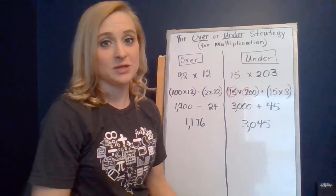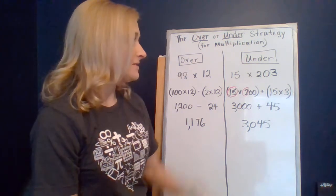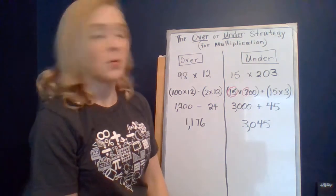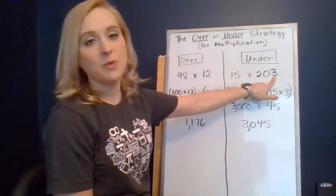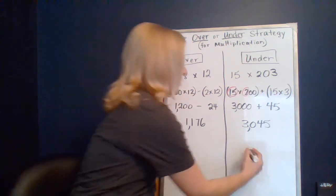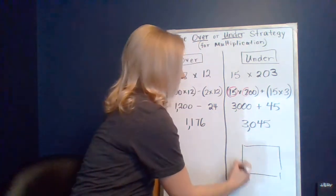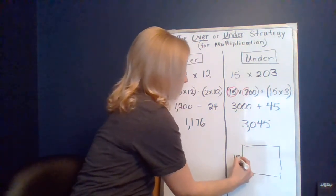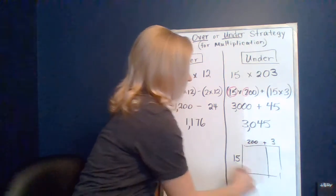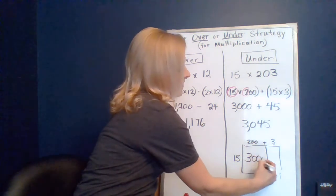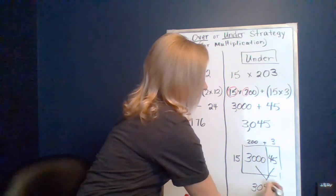Hopefully you're thinking really strongly about the area model since that is what's pretty solid in your brains. So this is just a simple partial product, because we're just breaking this factor apart into 200 plus 3. So really, that under strategy looks a lot like the area model where we didn't break 15 apart, but we did break 200 and we broke that 3 apart. And we found 15 times 200 is 3000 and 15 times 3 is 45 and we put those together to get 3,045.